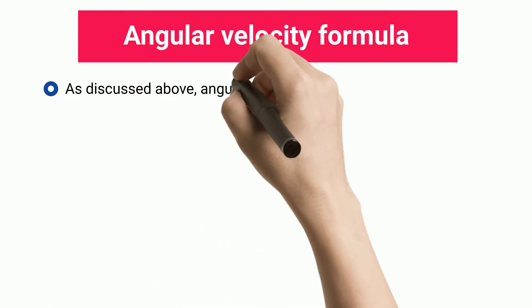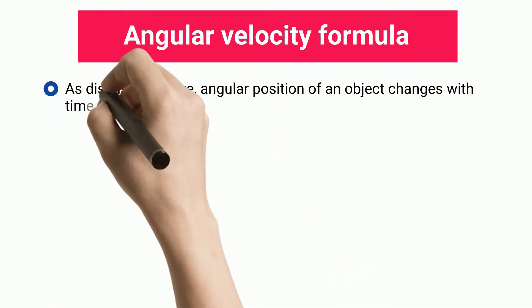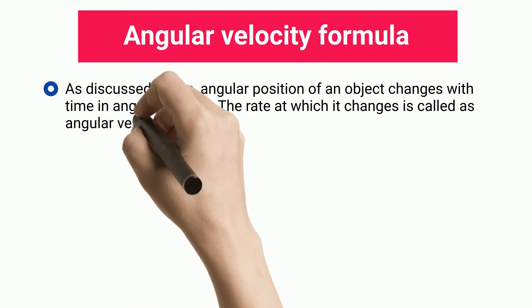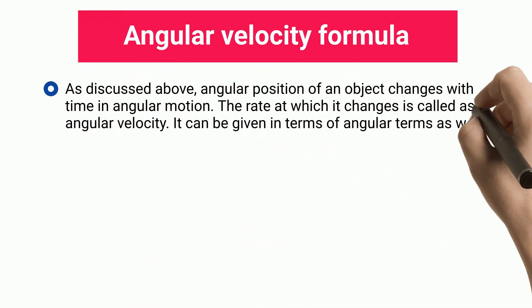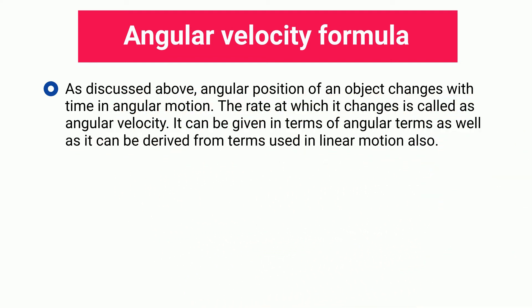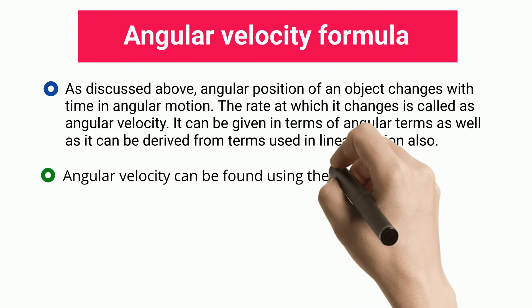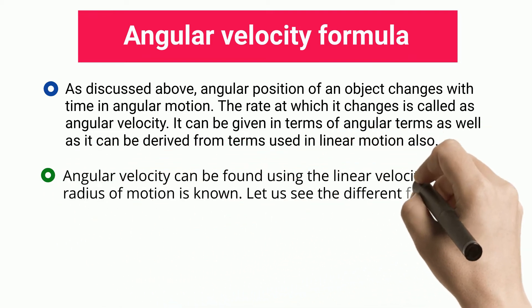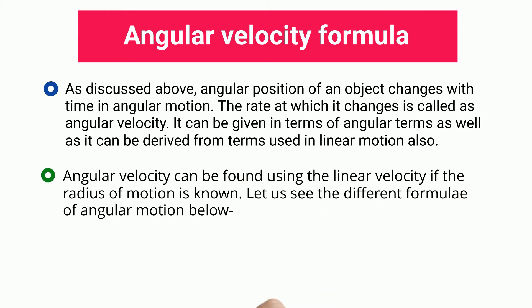Angular velocity formula: as discussed, the angular position of an object changes with time in angular motion. The rate at which it changes is called angular velocity. It can be expressed in angular terms, and it can also be derived from terms used in linear motion. Angular velocity can be found using the linear velocity if the radius of motion is known.